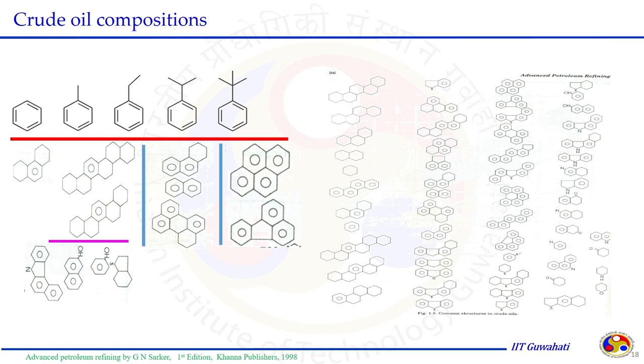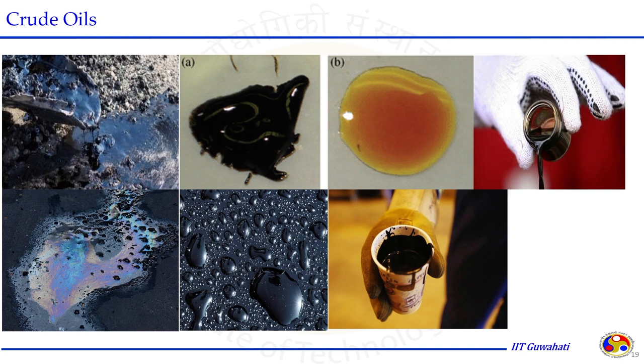The crude oil composition can vary — it could be cyclic, isoparaffinic, paraffinic or aromatic and can range from very low carbon number C1 to very high carbon number up to C70. What we use as gasoline or diesel looks very light and transparent in color, but in actuality crude oil is very thick, black and brown in color — some images are shown here. This crude oil goes to the refinery and gets refined, and different fractions of the petroleum substance are produced at the refinery.